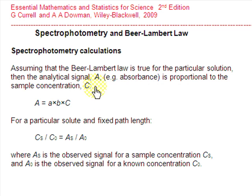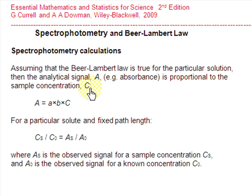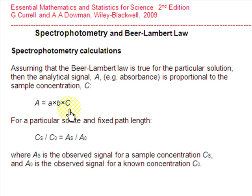In a spectrophotometer, if the Beer-Lambert law is true for a particular solution, then the analytical signal A recorded is proportional to the sample concentration C. This can often be written as the absorbance A equals ABC, where A is the absorptivity of the solute, B is the path length in the spectrophotometer, and C is the concentration of the solution.